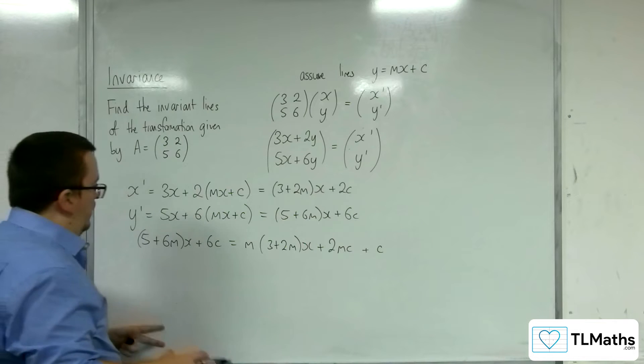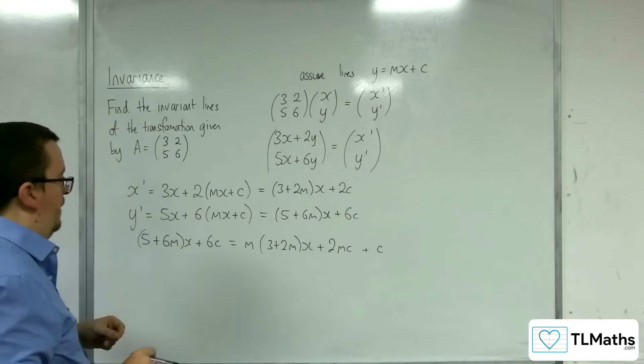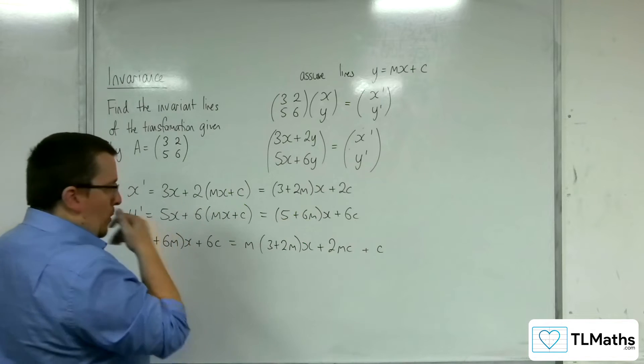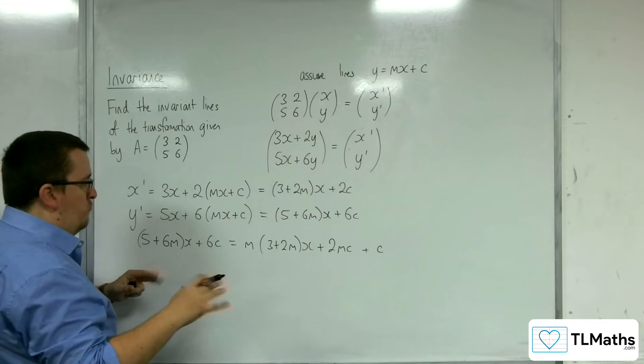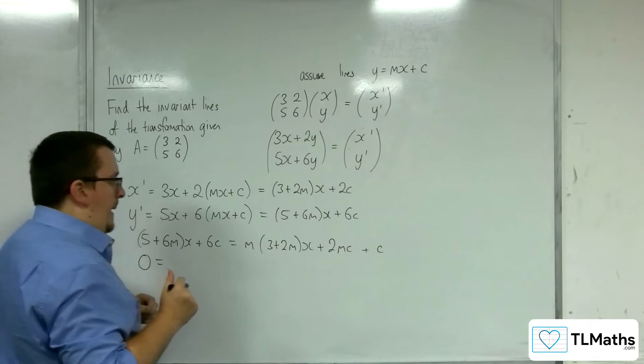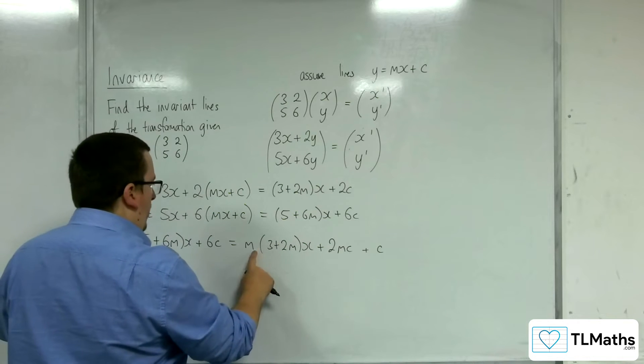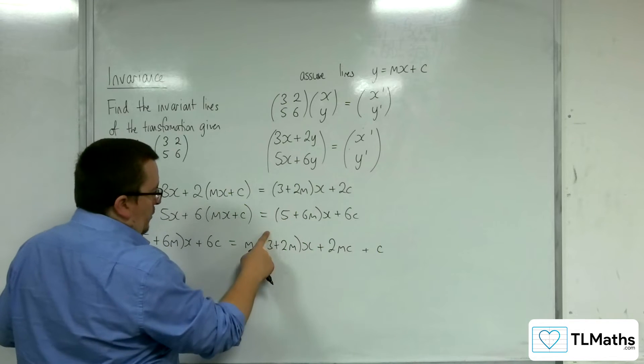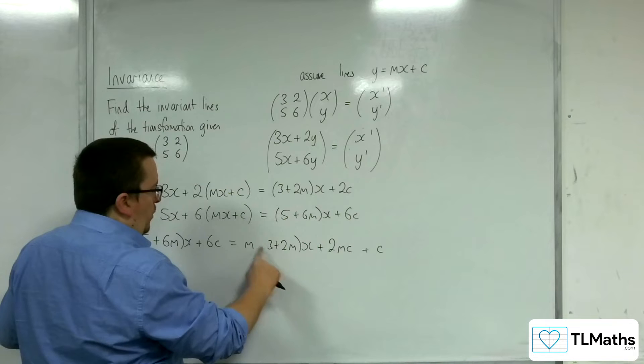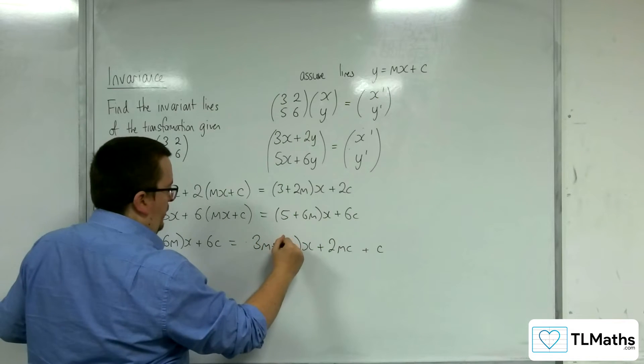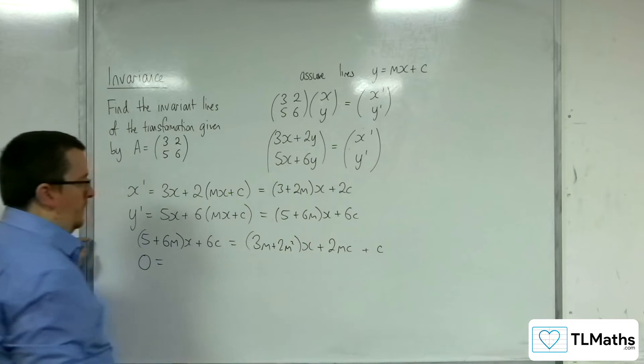So now what I want to do is I want to get this simplified. So what we will do is we're going to move everything onto the right-hand side of the equation. I'm also going to pull the m into this bracket here. So that will give us 3m plus 2m squared.